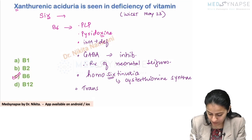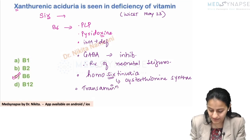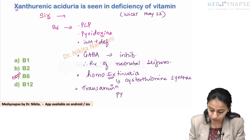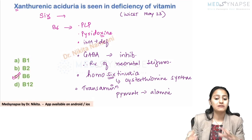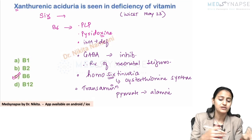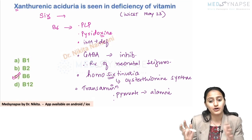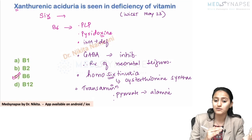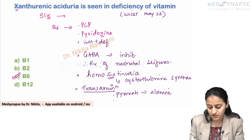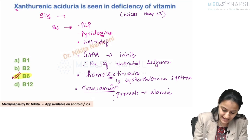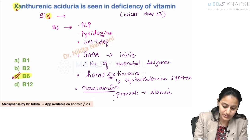B6 is also the vitamin responsible for transamination reactions — for example, conversion of pyruvate to alanine and alanine back to pyruvate, as well as aspartic acid to oxaloacetate. These transamination reactions are all B6 dependent. Remember all these important points for B6.